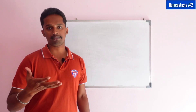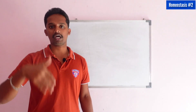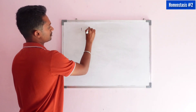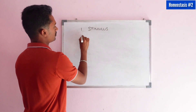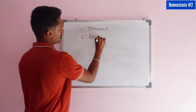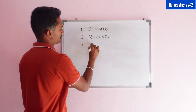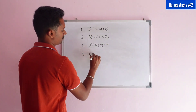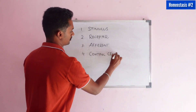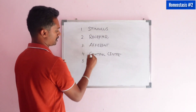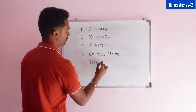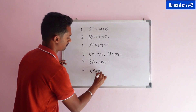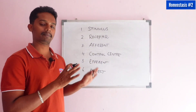We have body temperature as an example. If the temperature is less than enough, we go through several steps: first the stimulus, then the afferent neuron via the afferent pathway, then the control center, then the efferent pathway, and finally the sixth step — the final response via the effector.